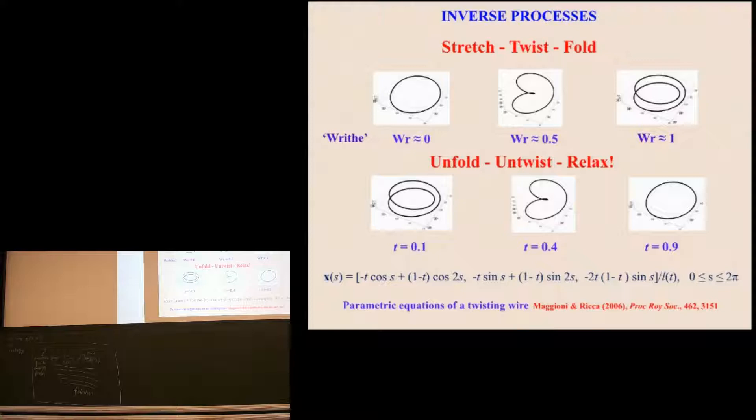It was Renzo and his student, Maggioni, who devised a nice parametric representation of this process that takes you from a single cover of a circle to a double cover. When t is equal to zero, you have cos 2s, sin 2s, zero. So you have a double cover of a circle, s going from zero to 2π. And when t is equal to one, you have just cos s, minus cos s, minus sin s, and again zero here. So you have the single cover. So this is a nice parametric representation of a twisting wire.